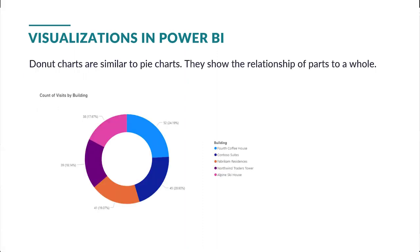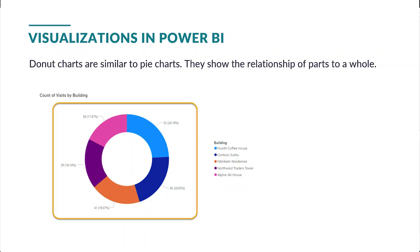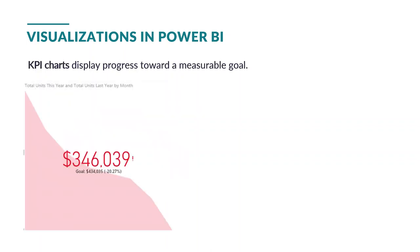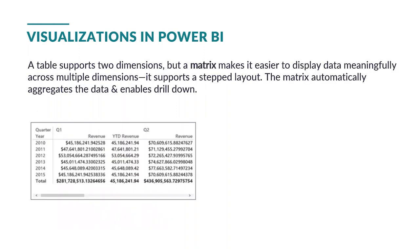We also have donut charts. Donut charts are similar to pie charts — they also show a relationship of parts to a whole. Power BI also offers the option to incorporate gauges into your dashboard. A gauge displays a current status in the context of a goal. Another very interesting and unique visual that Power BI offers is the KPI visual, which represents progress toward a measurable goal. Power BI also has table options and a matrix option. The difference between a table and a matrix is that a matrix makes it easier to display data meaningfully across multiple dimensions. It supports a step layout, so it's a multi-level, multi-layout table. The matrix automatically aggregates the data and enables drill down.